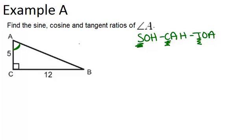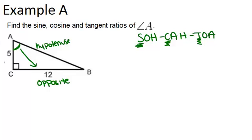So in order to solve this problem, the first thing we want to do is label our three sides: opposite, adjacent, and hypotenuse from angle A. So from angle A, 12 would be the opposite side. The hypotenuse is always the long side across from the right angle. The adjacent side always touches the angle, but it's not the hypotenuse.